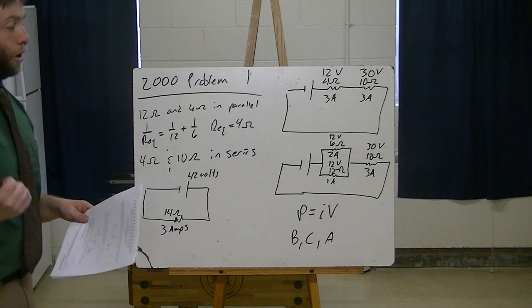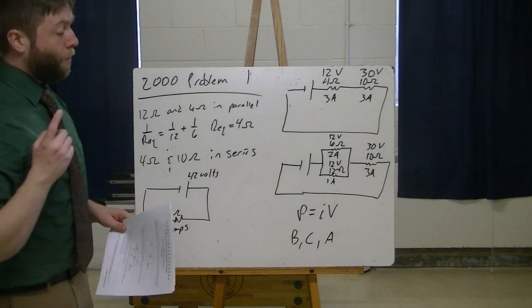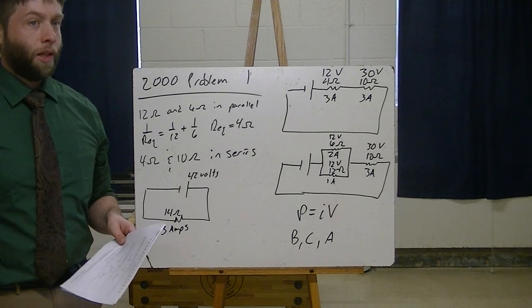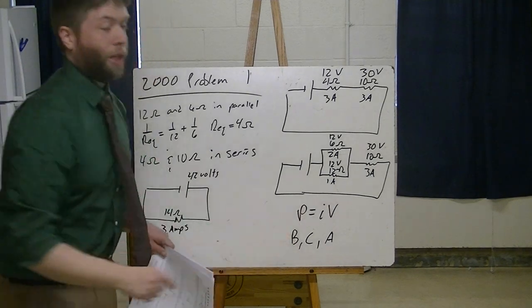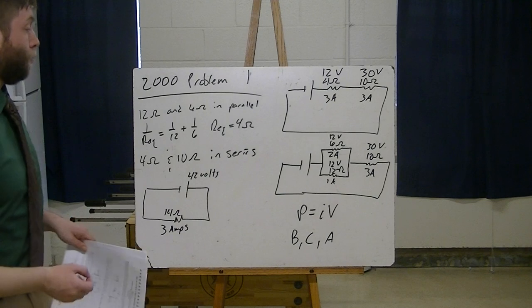First thing I would do is I would figure out the current and voltage for each light bulb, because I know that the brightness of the light bulb is dependent upon the power. The one with the greatest power is going to have the greatest brightness.